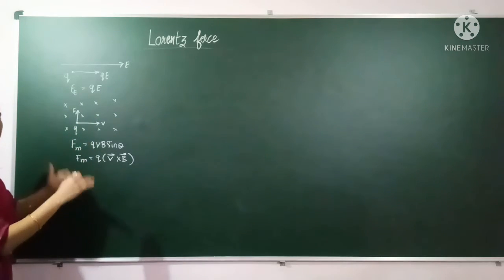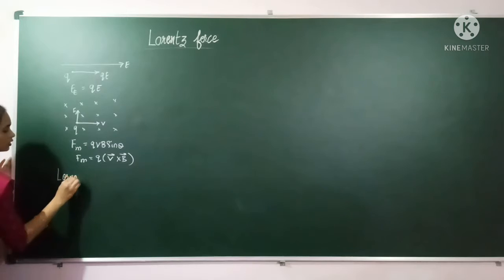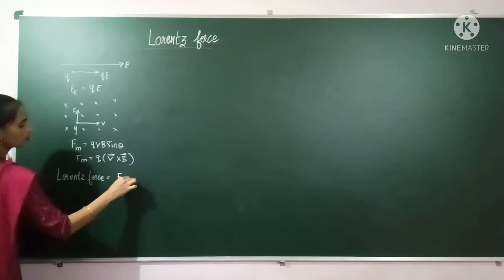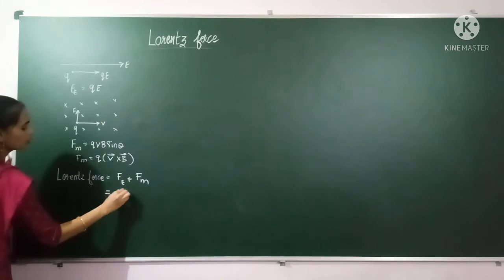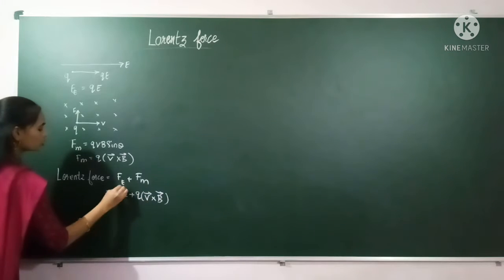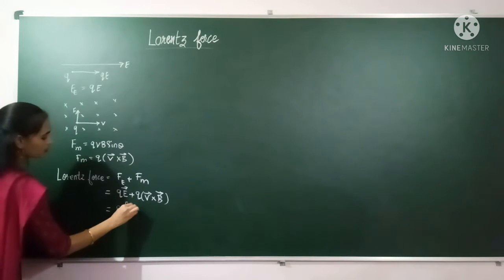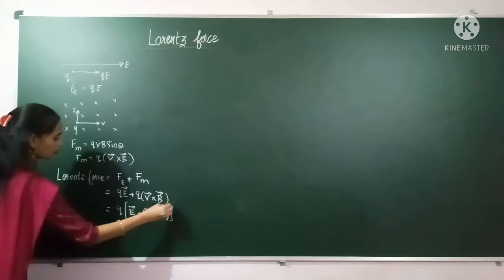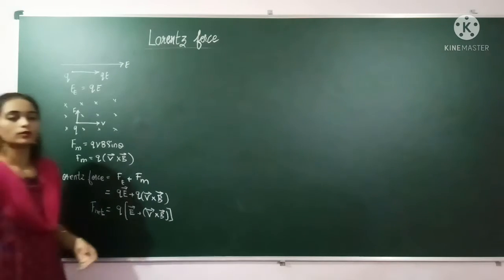If you take an electromagnetic field — where both electric and magnetic fields are present — and place a charge in that region, then the net force is called the Lorentz force. The Lorentz force equals electric force plus magnetic force: F = qE + q(v × B), which can be written as F = q(E + v × B). This is the net force experienced by the charge in an electromagnetic field.